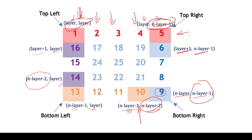In every direction, either the row or the column remains constant, and the other parameter changes. For direction 1, going from left to right, the row stays at 'layer' and only the column changes as we move across to n minus 1 minus layer.